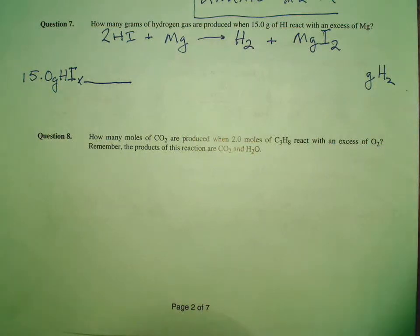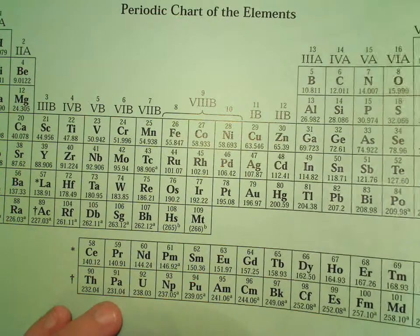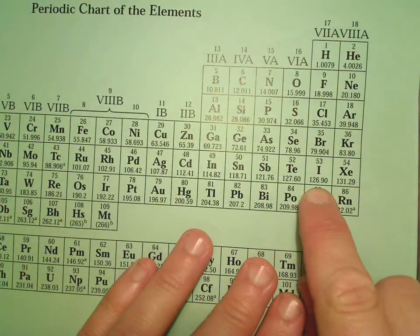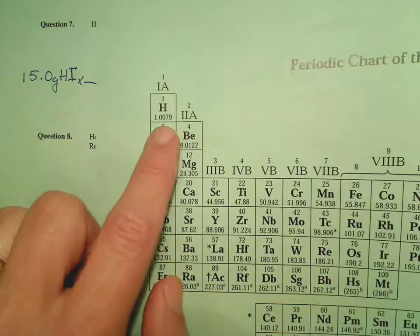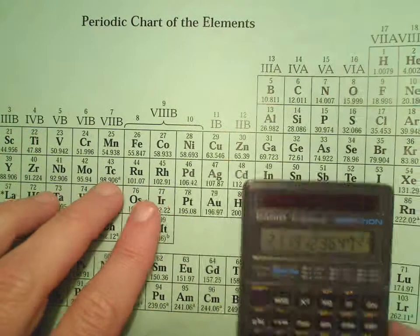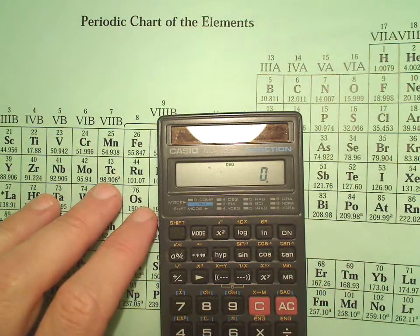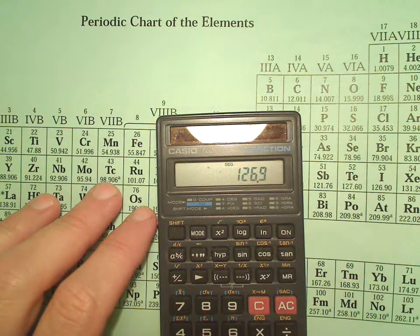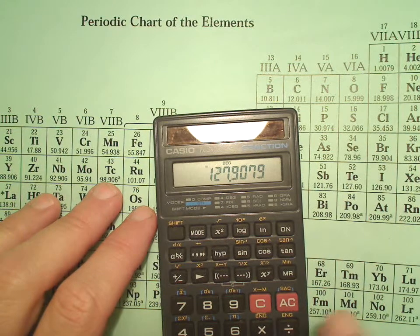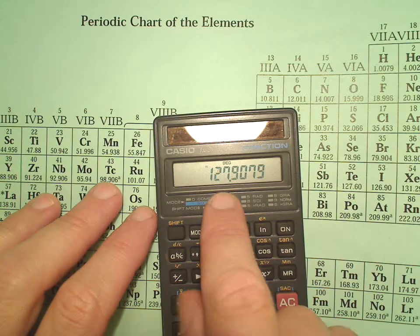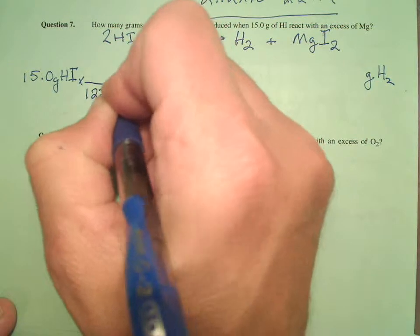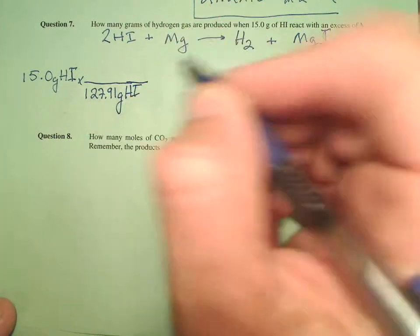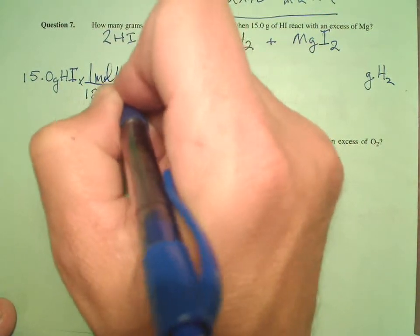So I'm going to need the molar mass of HI. Iodine has a molar mass of 126.9, and hydrogen has a mass of 1.0079. So 126.9 plus 1.0079 equals 127.91 — the molar mass of HI is 127.91 g/mol. So 127.91 grams of hydroiodic acid is one mole of hydroiodic acid.